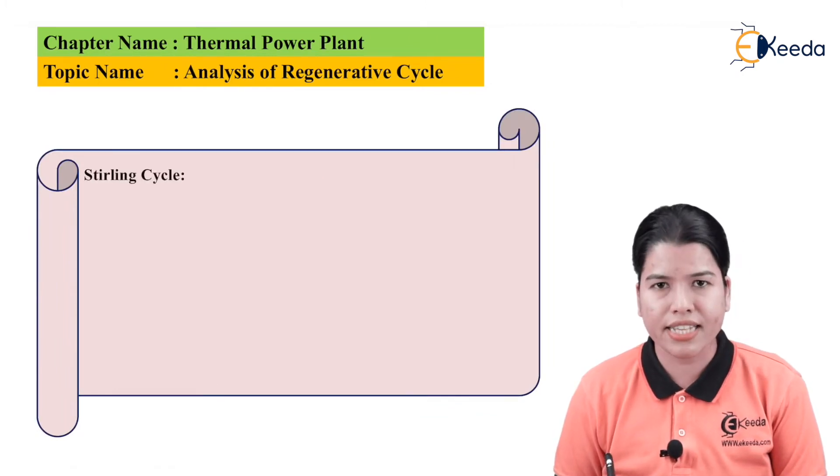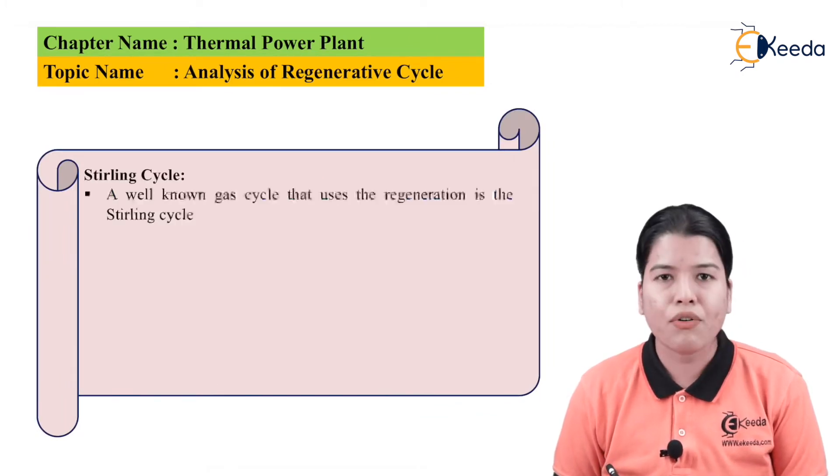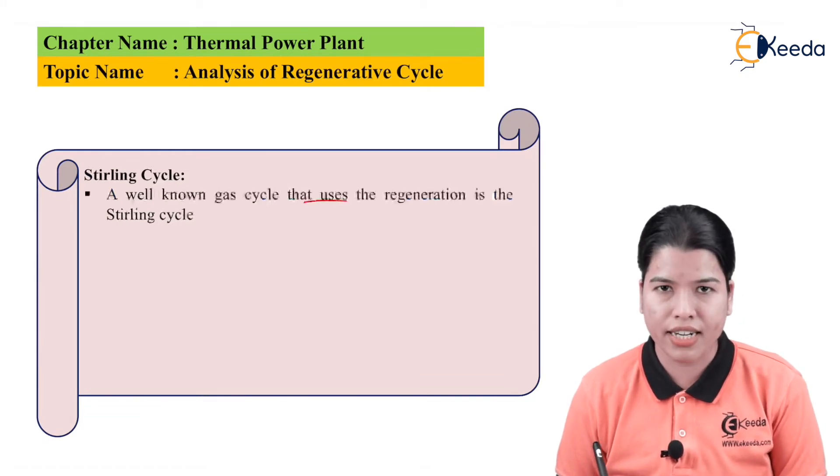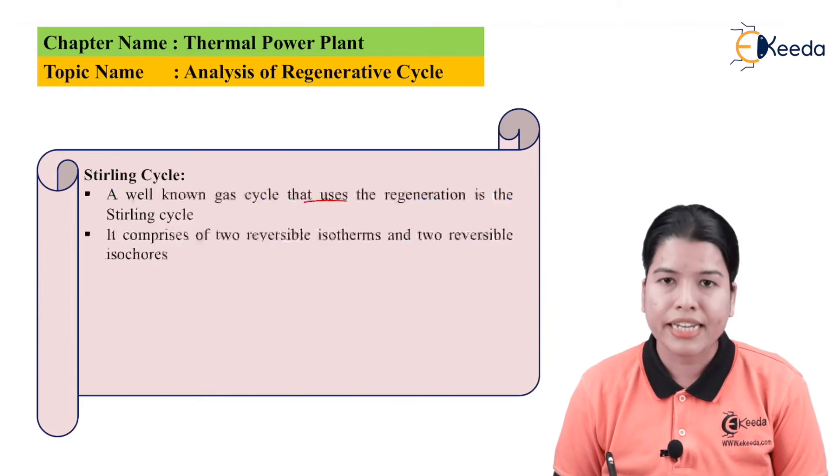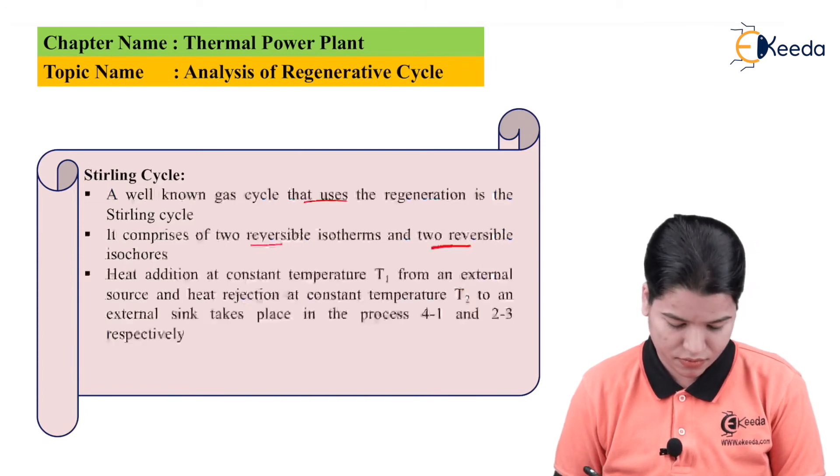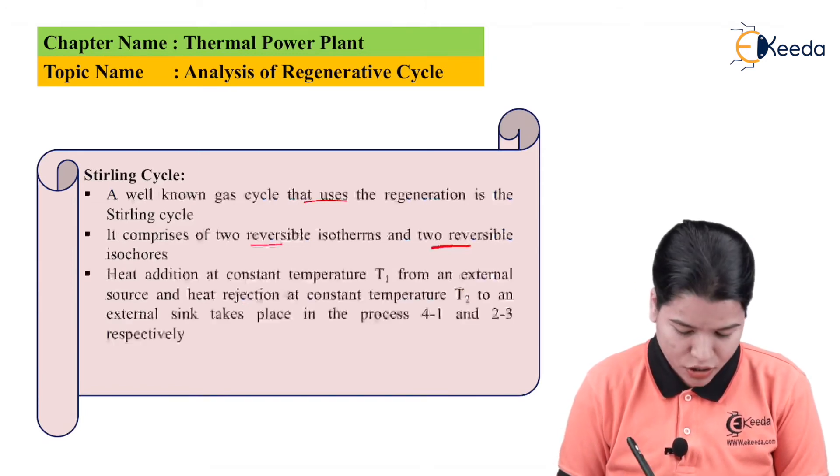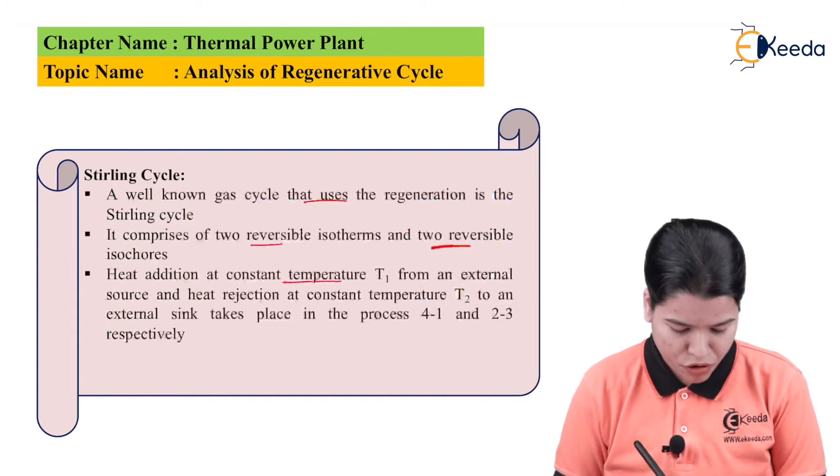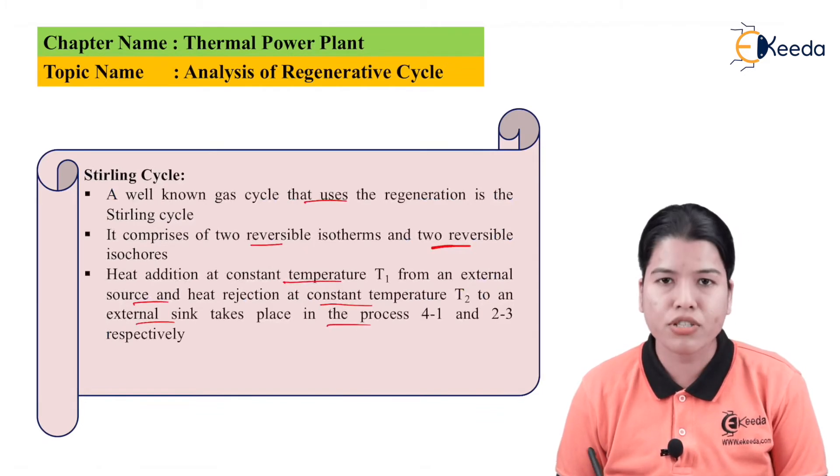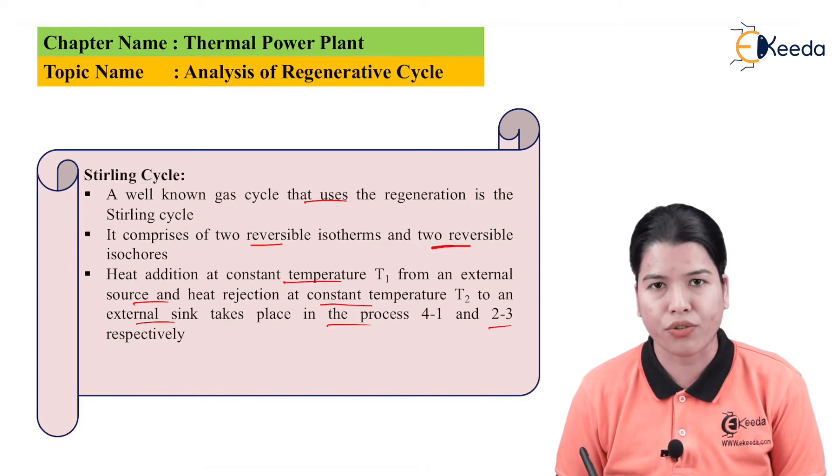Now, let us study the Stirling cycle. A well-known gas cycle that uses the regeneration method is the Stirling cycle. It comprises of two reversible isotherms and two reversible isochores. Heat addition at constant temperature T1 from an external source and heat rejection at constant temperature T2 to an external sink takes place in the process 4 to 1 and 2 to 3 respectively.